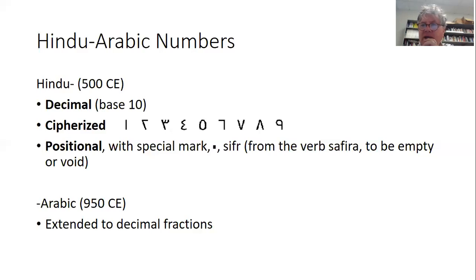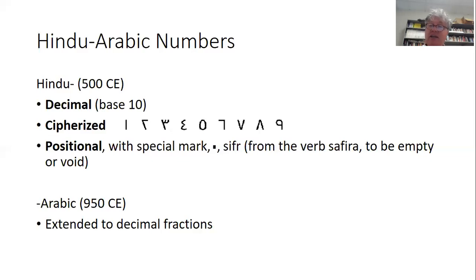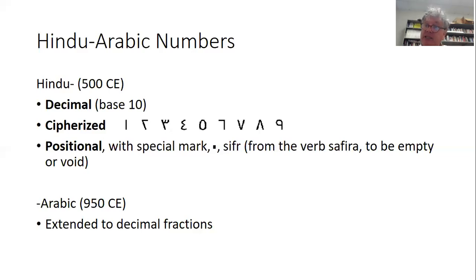You might wonder why we call them Hindu-Arabic numbers if the Indians did most of the work. The Arabic invention that topped it off was extending the system to decimal fractions. When I say 123.4, the Indians wouldn't have known what to do with that — it was an Arabic invention, first appearing around 950. It was then lost, reinvented, eventually reached the West, and it was really not until around 1600 that the modern way of writing numbers — decimal fractions like 0.12, meaning one tenth plus two hundredths — fully came about.